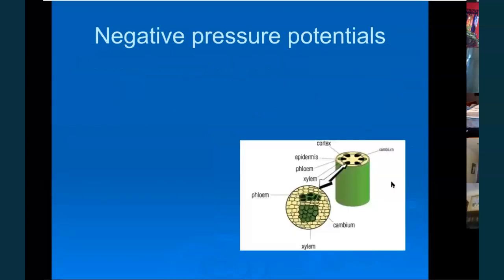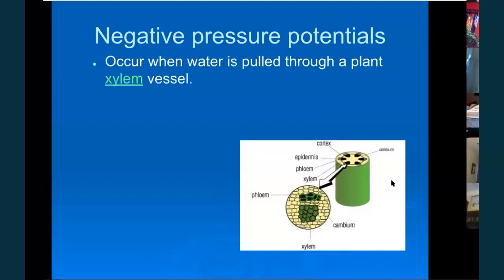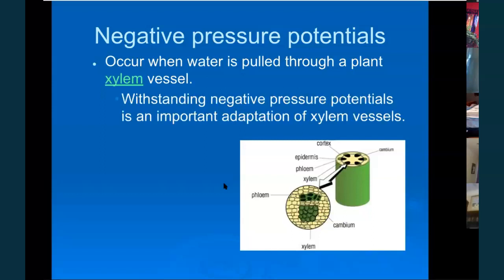The negative pressure in a plant is actually what causes water to move through it. Plants have two vessels — xylem and phloem, like blood vessels. Xylem moves water and minerals through the plant and can withstand negative pressure. In the leaves, water is evaporated from the plant, creating a negative pressure potential because the water is leaving and it's getting more concentrated, so water moves from the stems to the leaves.